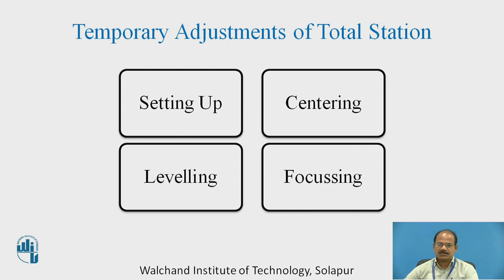In addition, we also need focusing, which can be done by eyepiece focusing as well as objective focusing. In some instruments, focusing is also possible by an auto-focus arrangement. But more important than all these operations is orienting the telescope of the instrument.